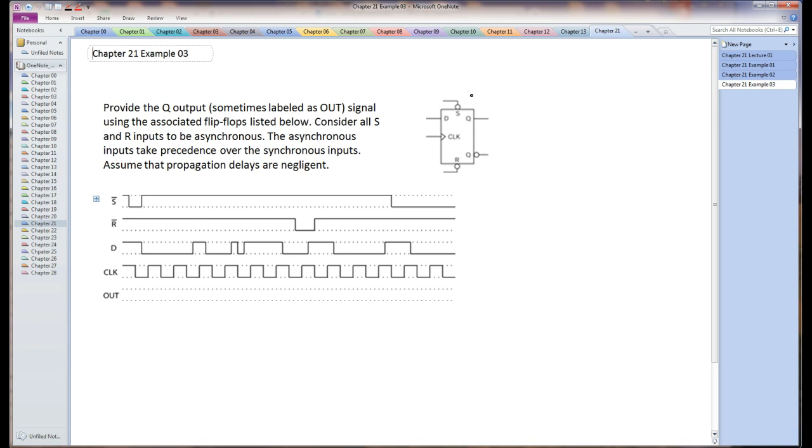The issue here is to fill out this timing diagram. So everything on this timing diagram is provided except for the output of the flip-flop. The output of the flip-flop is considered the Q output. Let's crank through this thing and see what we can do.